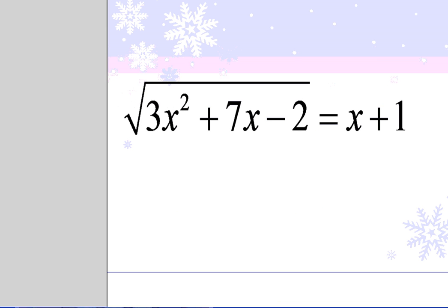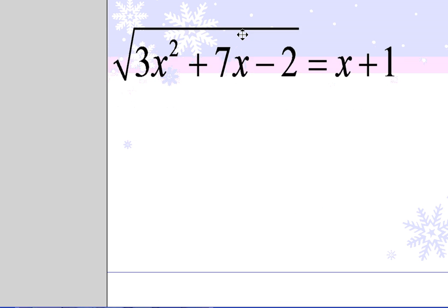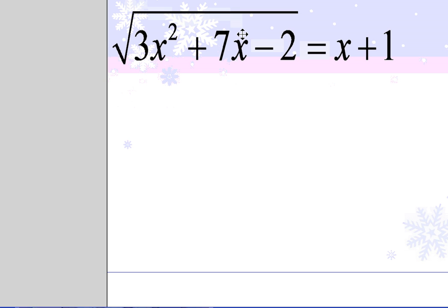Here's my next problem. Okay, step 1 is to isolate the radical. In this case, I already have the radical all by itself. It's on the left-hand side. So step 2 is to raise both sides to the inverse power. I'm going to raise both sides to the power of 2.